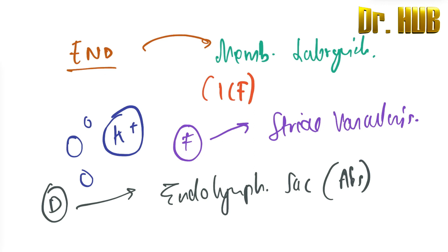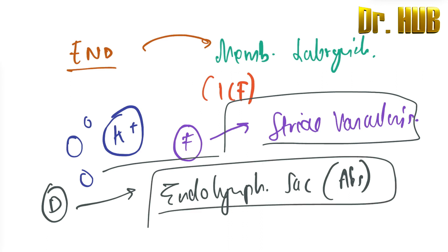So endolymph membrane is labyrinth. It is similar to ICF, potassium ions. It is formation is produced by the stria vascularis and the endolymph sac. It is the drainage. It is absorbed through the endolymphatic sac.